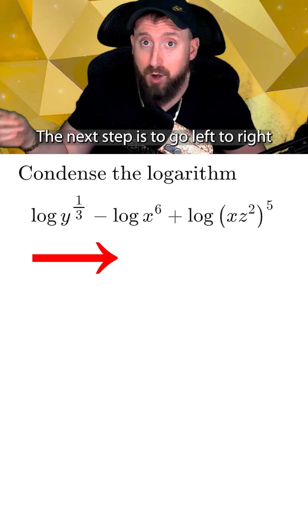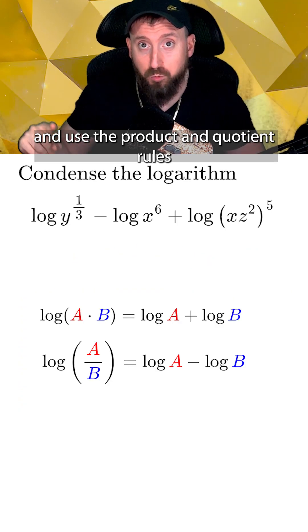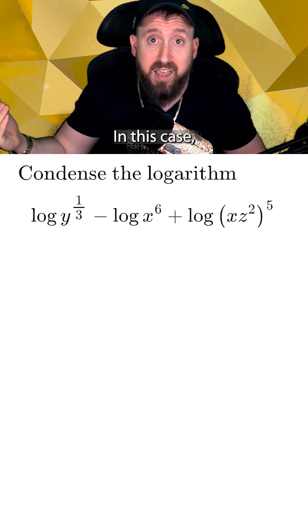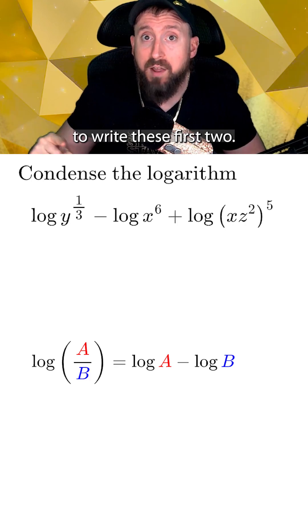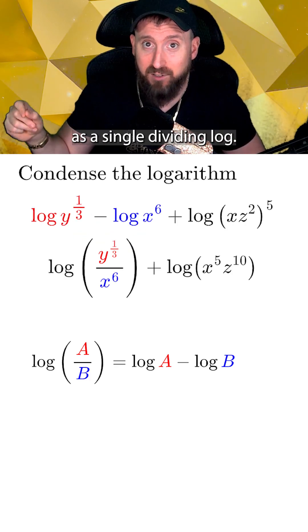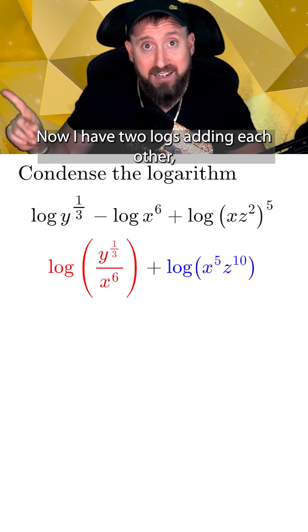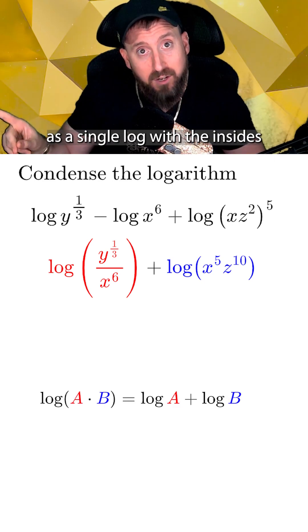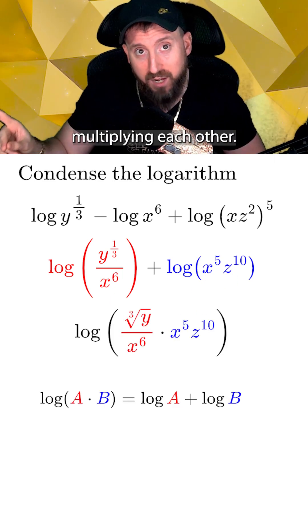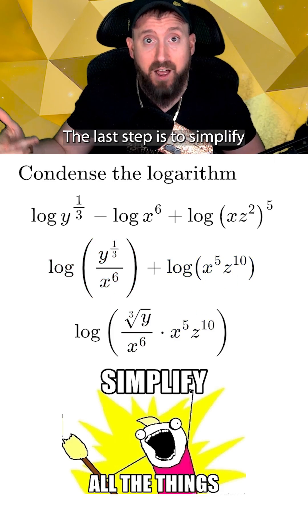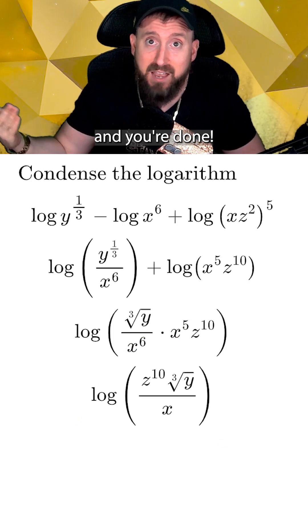The next step is to go left to right and use the product and quotient rules to group things together. In this case, I'm going to use the quotient rule to write these first two subtracting logs as a single dividing log. Now I have two logs adding each other, which I can write as a single log with the insides multiplying each other. The last step is to simplify by canceling out some exponents and you're done.